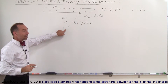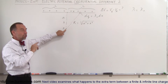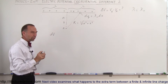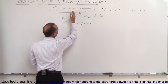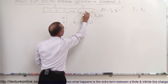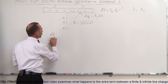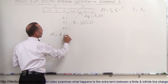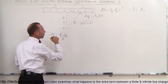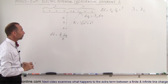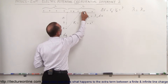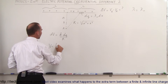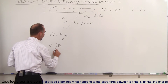The potential at point A due to the charge dq is a small dV. We call it dV because we're going to add up all the little dq's: dV equals K times dq divided by R, which is K times the charge divided by the distance. The total potential V equals the sum of all dV's, and we integrate from 0 to L.